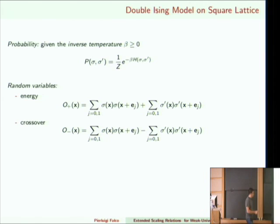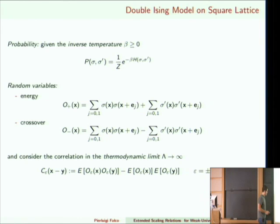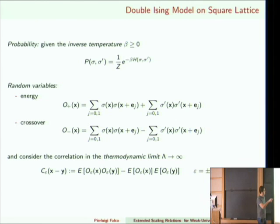Given these two random variables, you want to study the correlation, meaning the expectation of the product minus the product of the expectations, when epsilon is plus or minus. You want to do that in the thermodynamic limit: what I've done so far is for finite volume lambda, and when writing this formula I'm also assuming you take the limit of infinite lambda, so x and y are on the lattice Z².